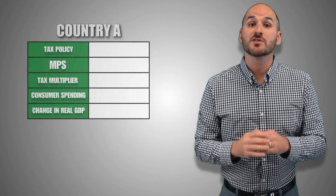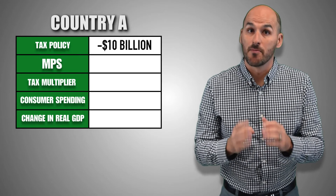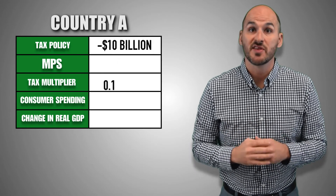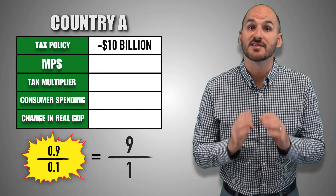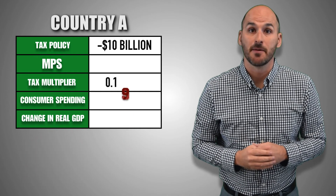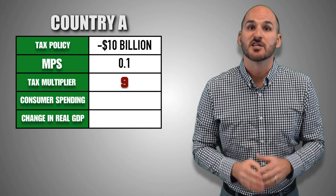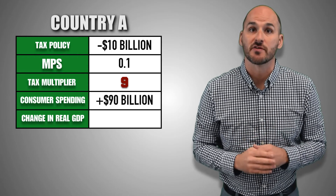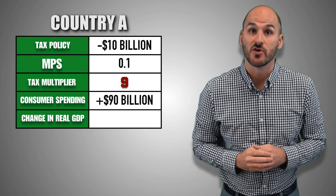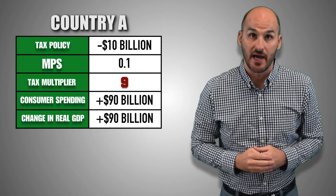For example, suppose the government of Country A decreases personal income taxes by $10 billion, and the MPS in Country A is 0.1. The tax multiplier is 9. After the expansionary fiscal policy is implemented, consumers use their new disposable income to spend $90 billion on goods and services through the multiplier effect. Ultimately, a $10 billion decrease in personal income taxes leads to a $90 billion increase in real GDP output in Country A.